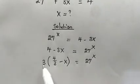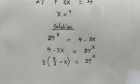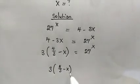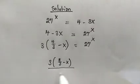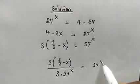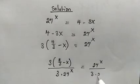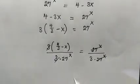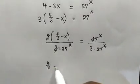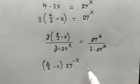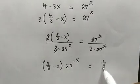Now we're going to divide both sides of this equation by 3 multiplied by 27 raised to the power of x. We have some nice cancellations, and we get 4 over 3 minus x, and 1 over 27 raised to the power of x is 27 raised to the power of negative x. This will be equal to 1 over 3 from the right.